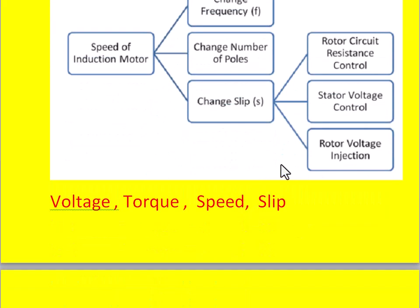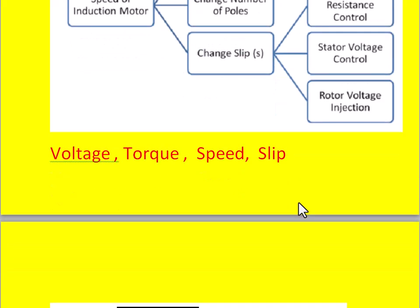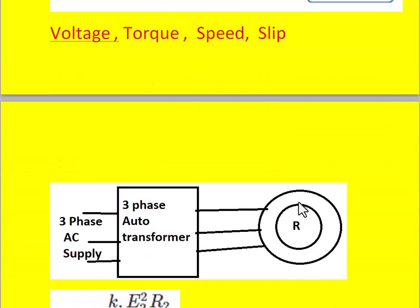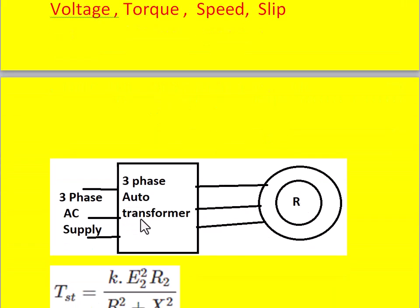In this video, the stator voltage control method will be discussed. In this method, voltage influences the torque, torque influences the speed, and speed influences the slip. The general circuit diagram shows a three-phase AC supply connected to the stator of the three-phase induction motor via a three-phase auto transformer to get variable voltage at the stator terminals.